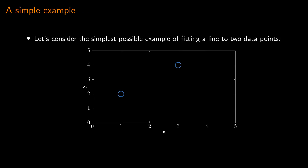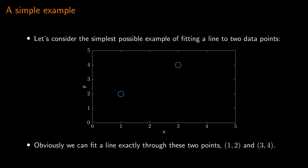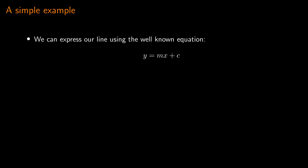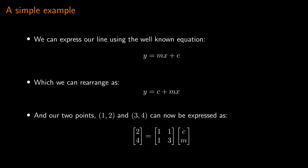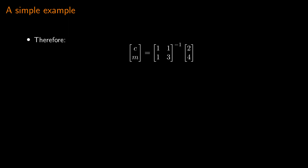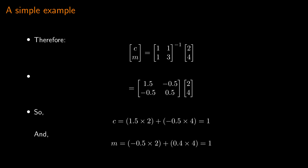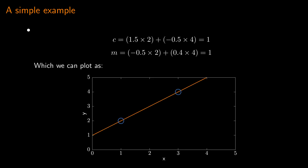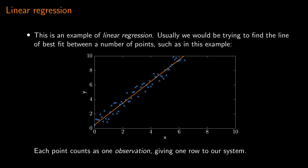We can start with the simplest possible example of fitting a line to just two points at (1,2) and (3,4). A line is completely and uniquely described by two points, so we will always be able to compute a line of exact fit. We base our model on the classic equation y equals mx plus c, rearrange it, and express our two points in that form. We can then solve for the unknowns c and m, which both come out as 1. If we plot the line y equals x plus 1, we can see that it passes through both points, just as we expected.